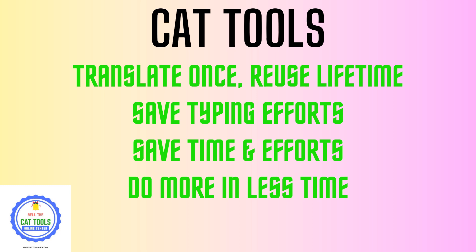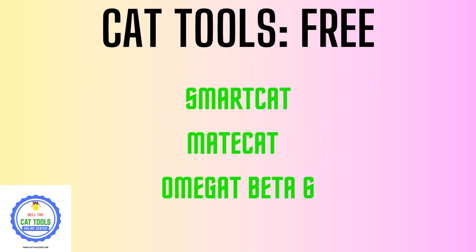And if I make a change at the tenth occurrence, the same target translation will be propagated to the remaining nine occurrences. So consistency is improved, typing effort is reduced, we save time and effort, and we are able to do more work in less time. If you want to become a smart worker or smart translator, start using a CAT tool today. Now let's see what free CAT tools are available.